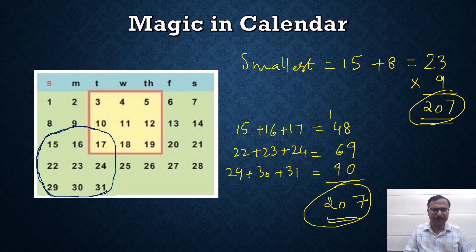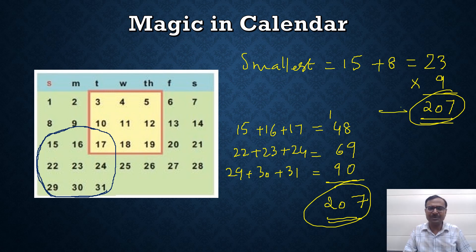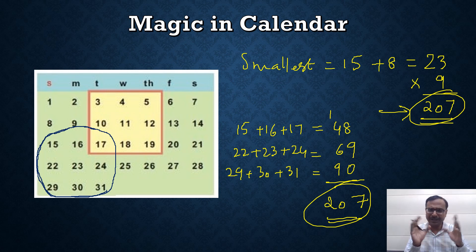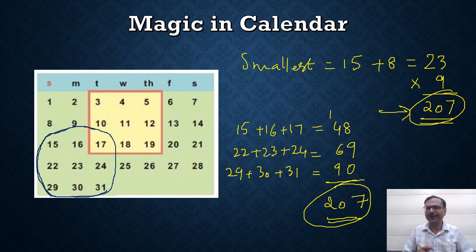Friends, pick up any random calendar. Take a 3×3 matrix and do this: take the smallest number, add 8, multiply by 9. The number you obtain will be the sum of all 9 numbers you are taking up. Let me know in the comments what you feel is the correct explanation for this particular phenomenon, and let me know if you enjoyed it. I will wait for your comments and will surely reply.